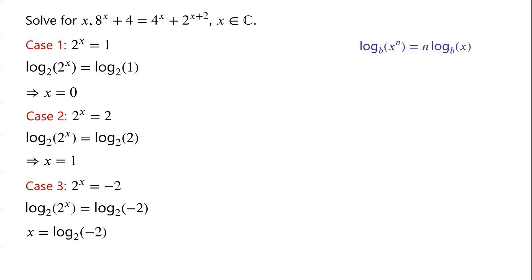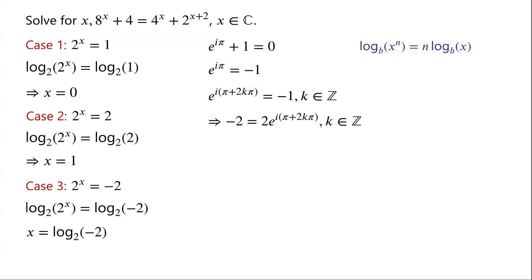Next we need to evaluate the logarithm of a negative number. A clever way of getting rid of the negative 2 is using Euler's identity. We know that e to the power of i pi plus 1 equals 0, so e to the power of i pi equals negative 1. This still holds when adding 2k pi, that is, e to the power of i times (pi plus 2k pi) equals negative 1, where k is an integer. Then negative 2 can be written as 2 times e to the power of i times (pi plus 2k pi).